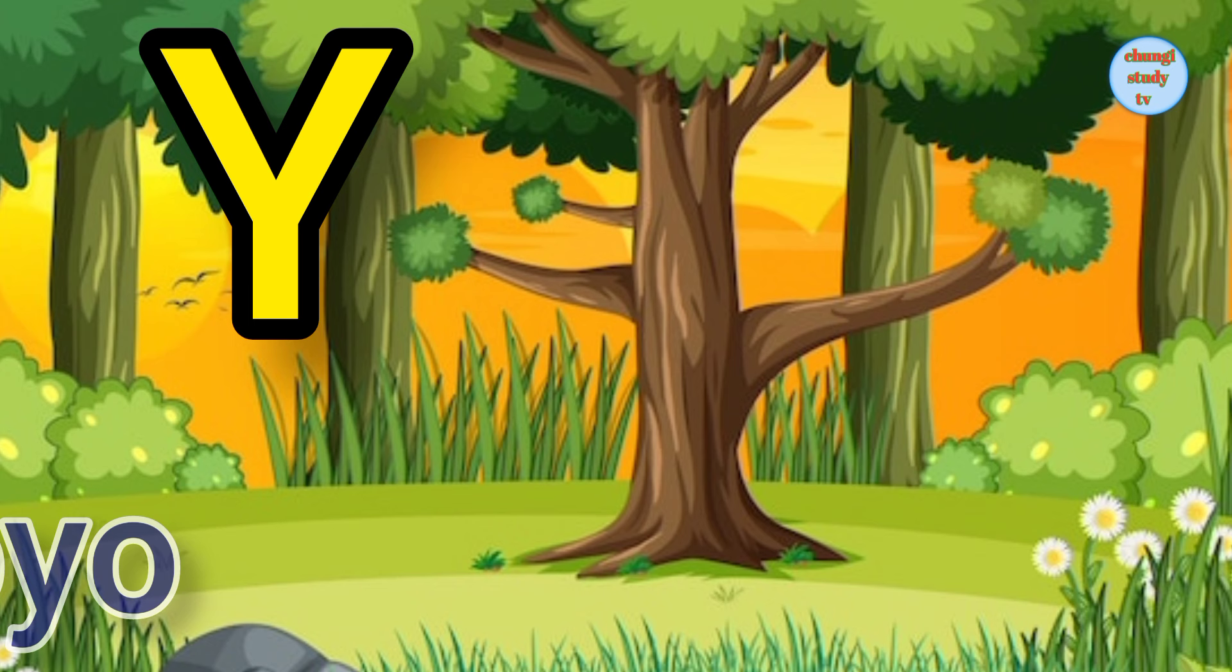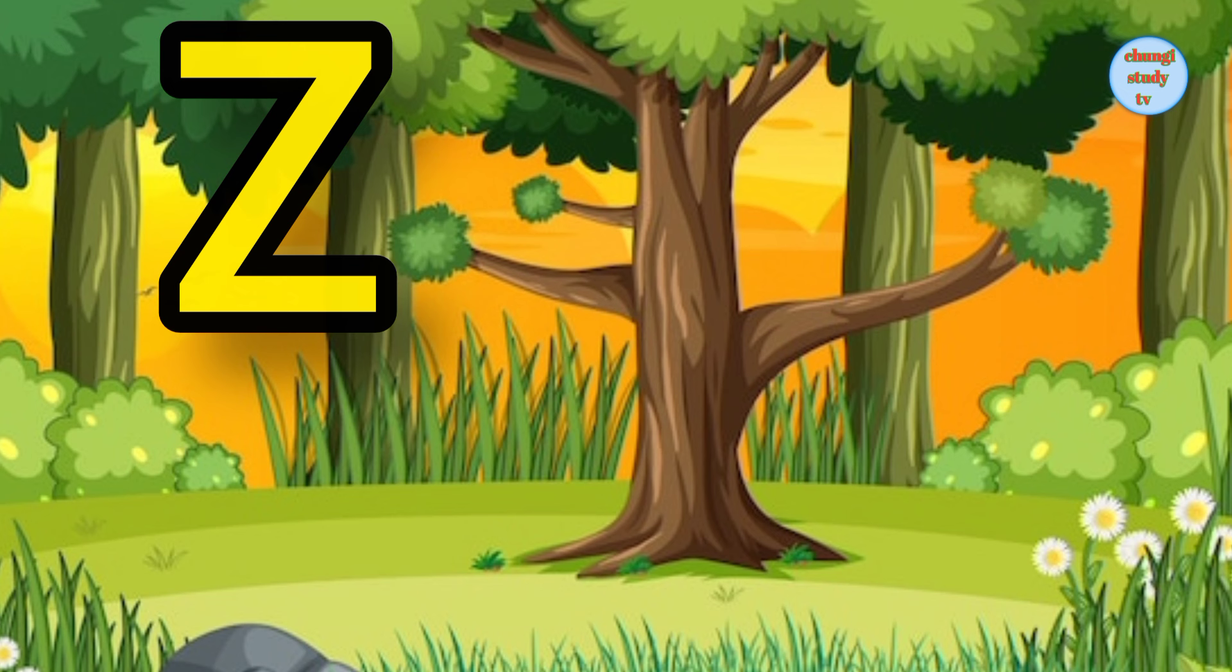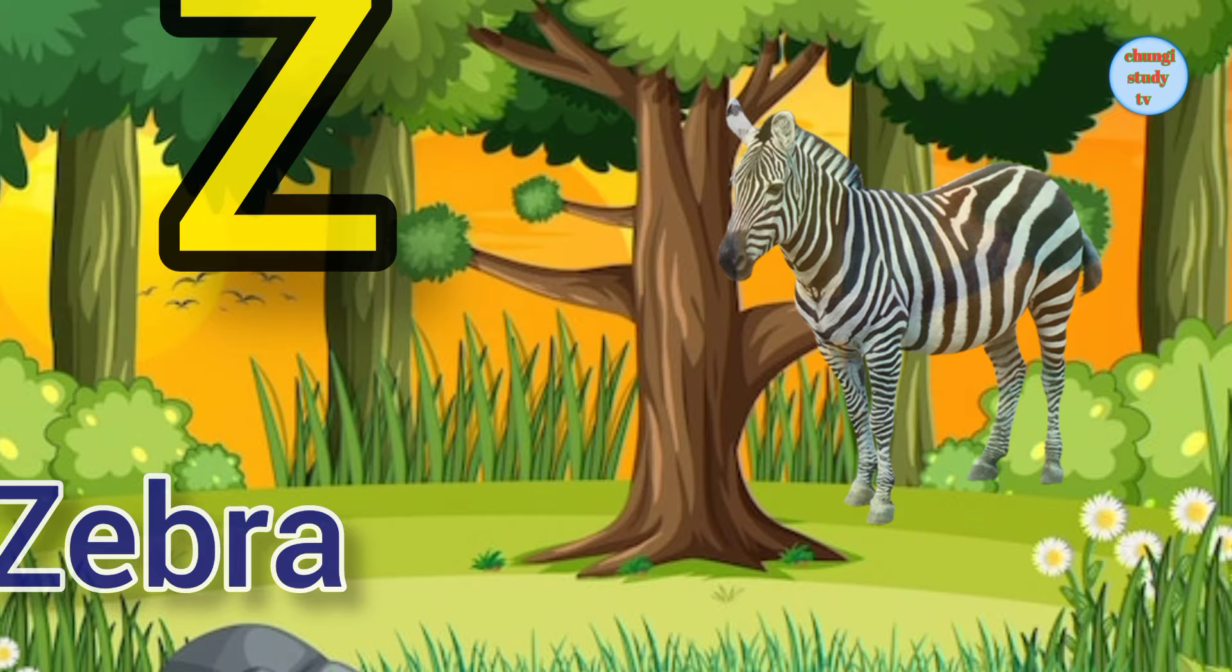Y. Y. Y for yoyo, yoyo means yoyo. Z. Z for zebra, zebra means chithidhar ghoda.